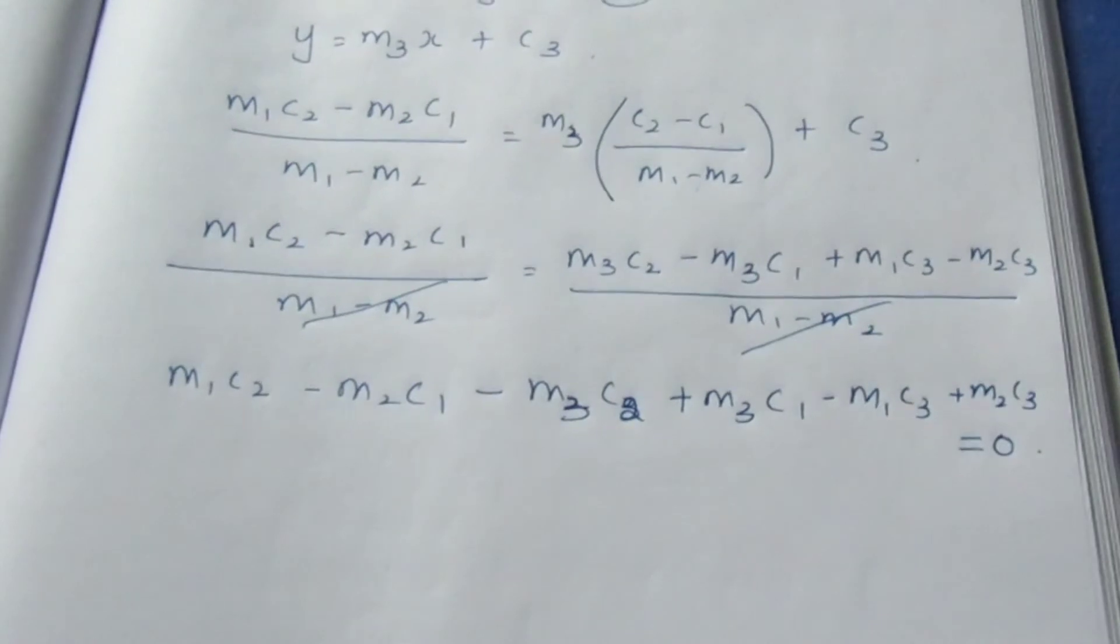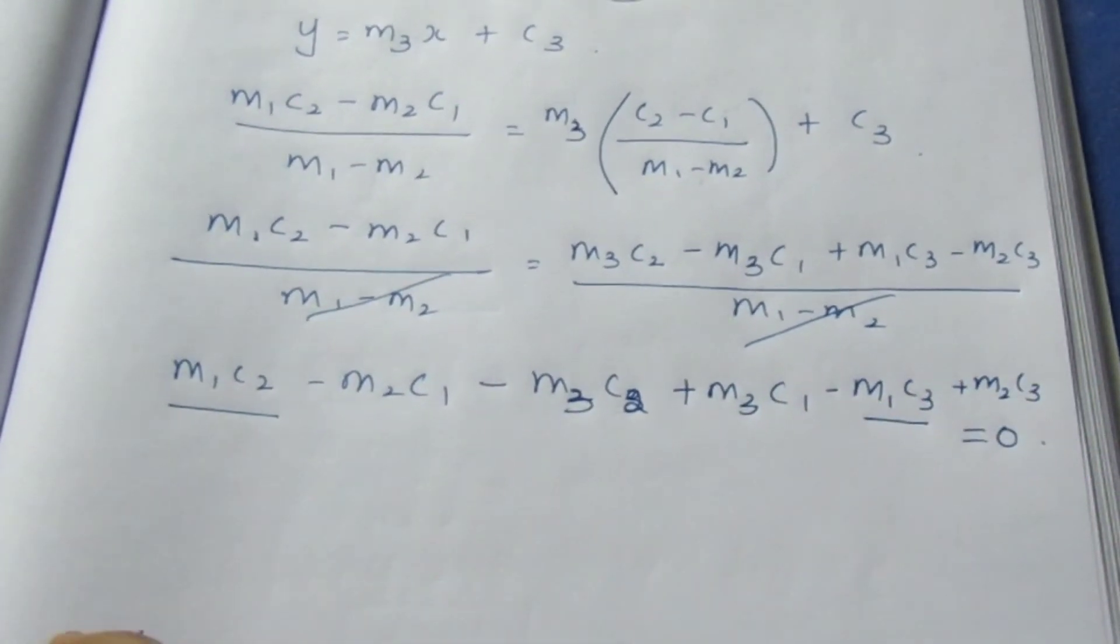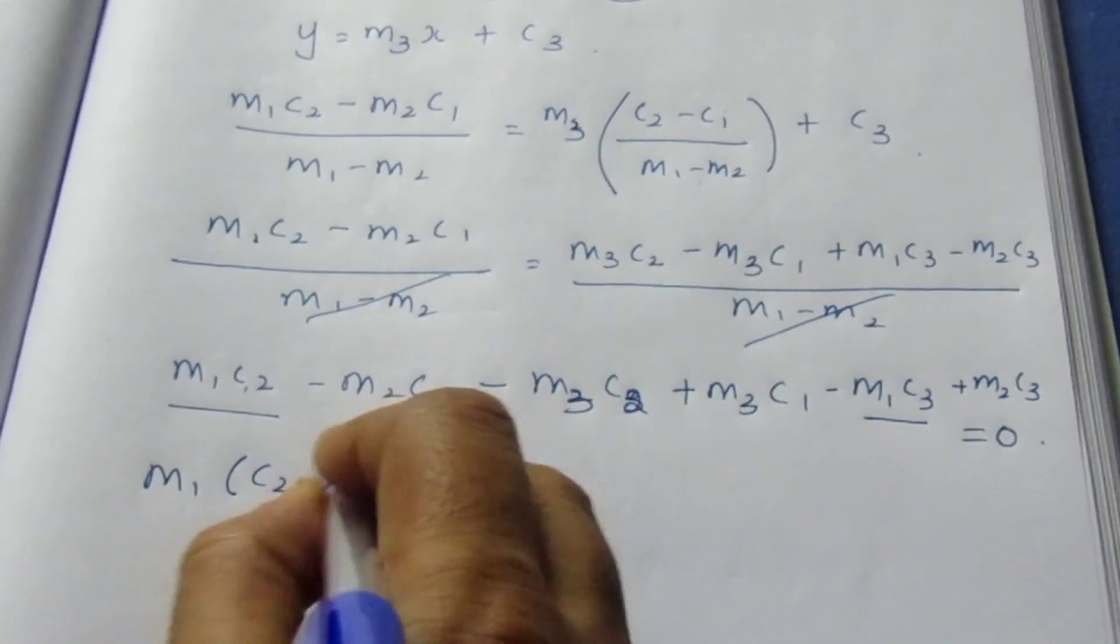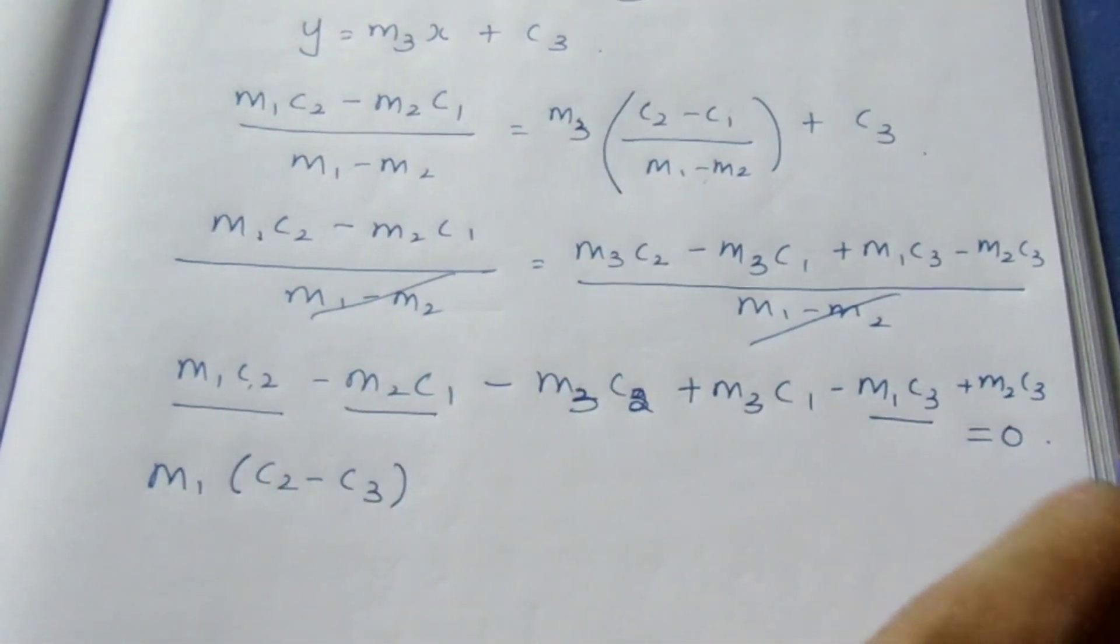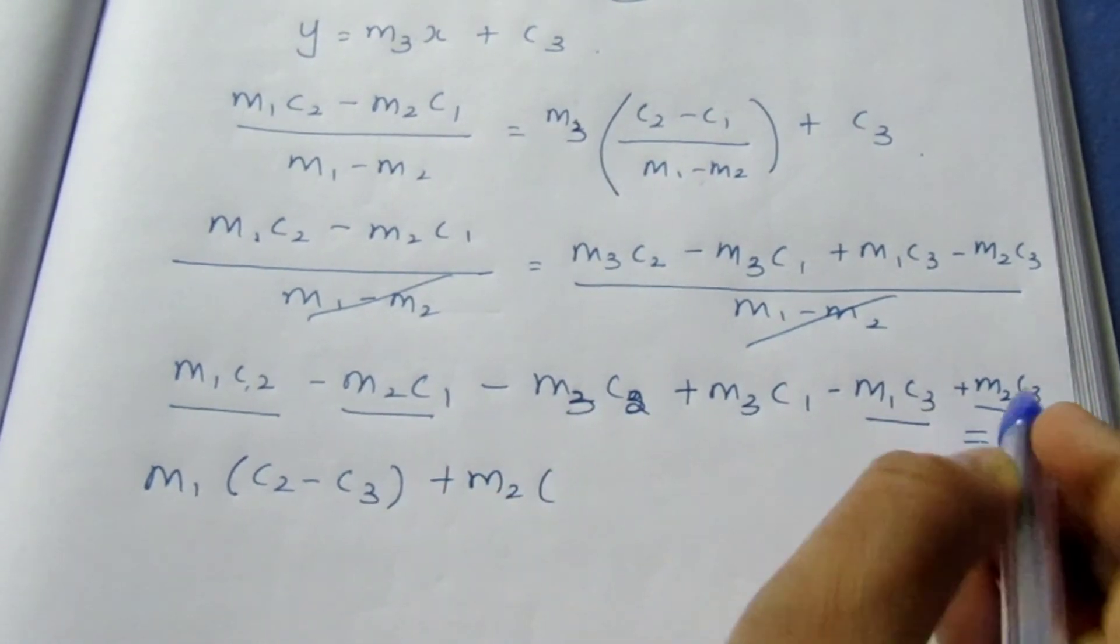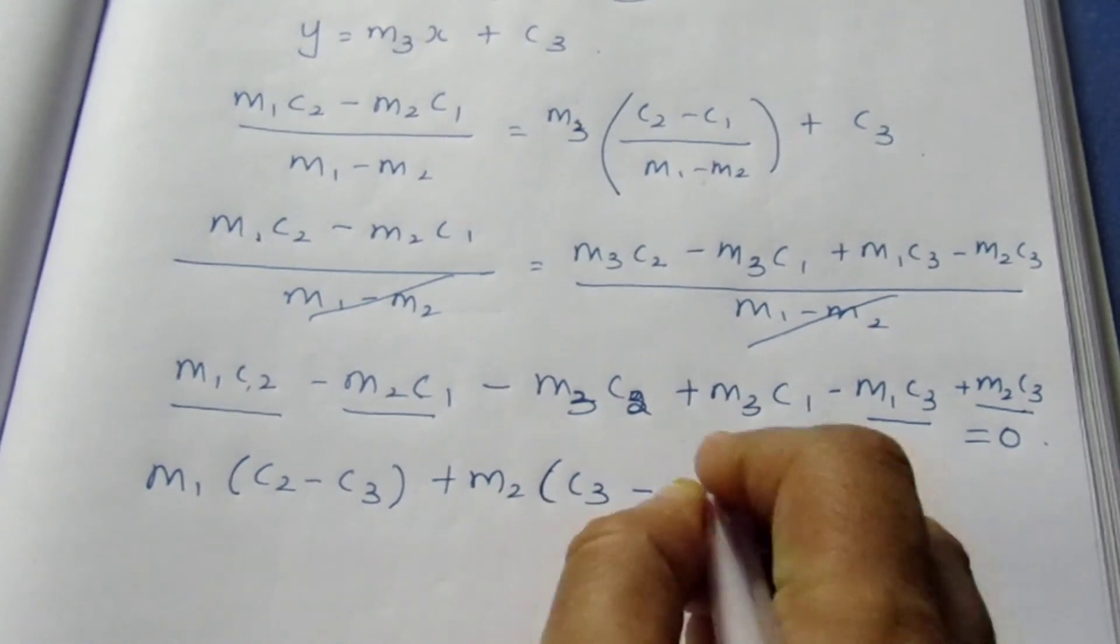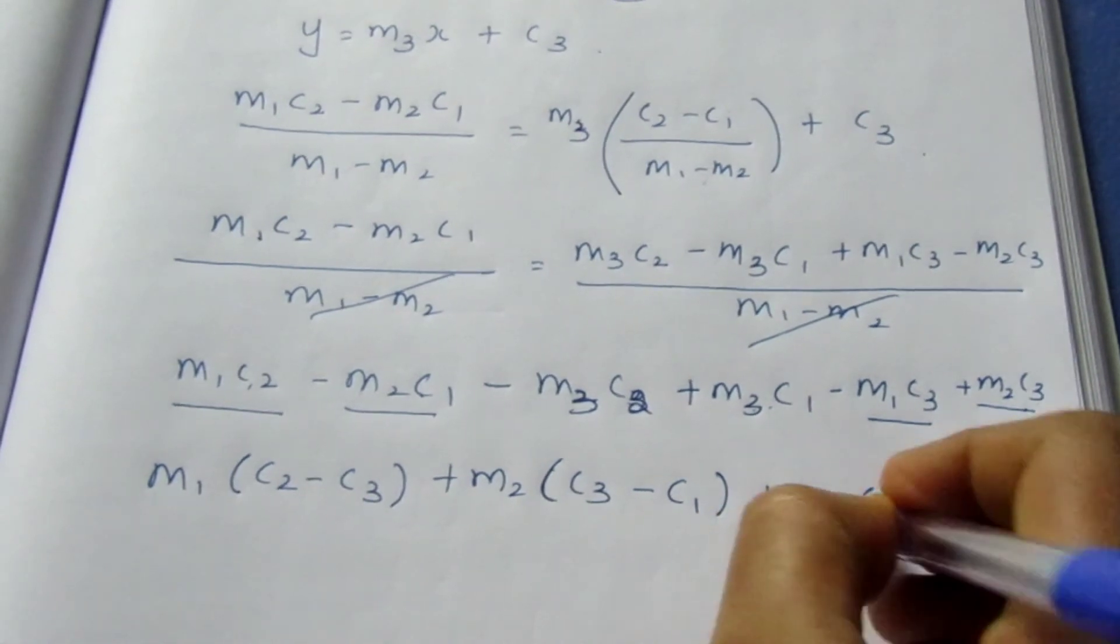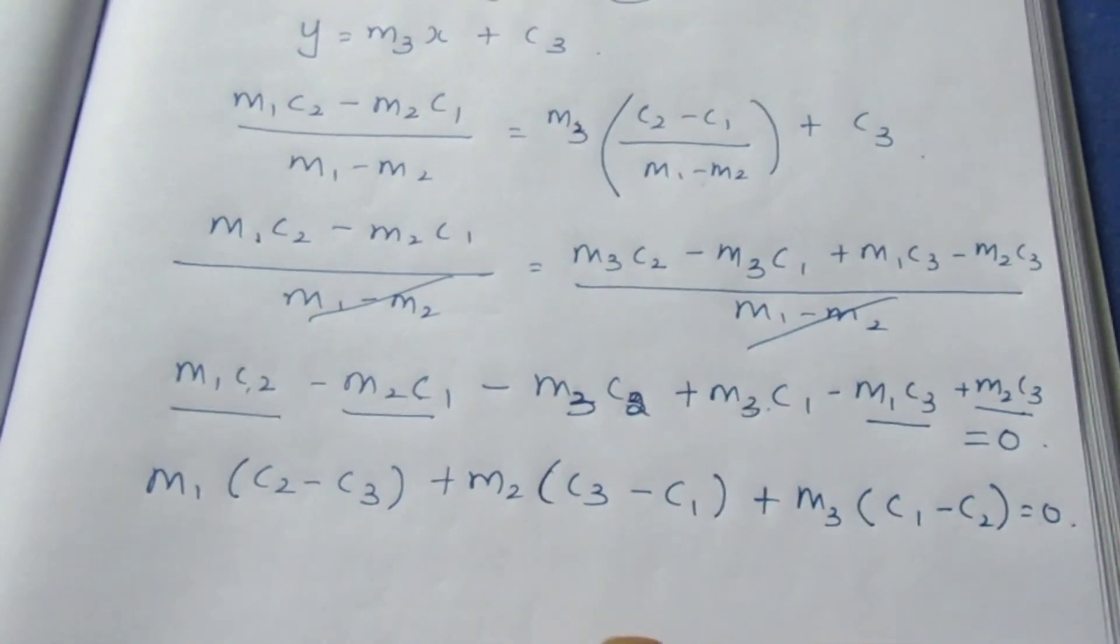According to the proof, we have m₁ common. So take the m₁ terms, take the common outside. Common m₁ outside means c₂ - c₃. Now m₂, taking m₂ common outside: c₃ - c₁. Now taking m₃ common in these two, we have c₁ - c₂ = 0. This is what we need to prove.